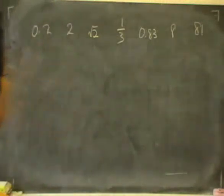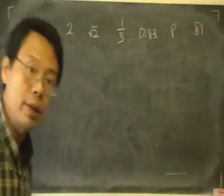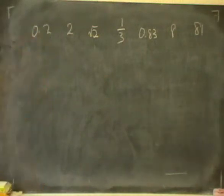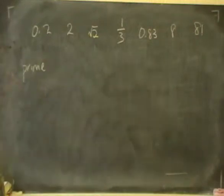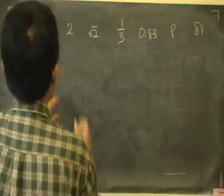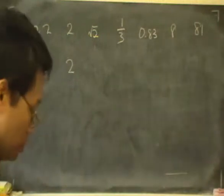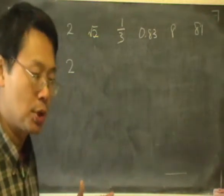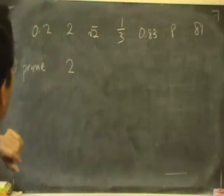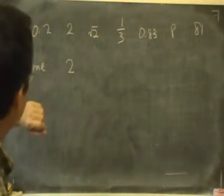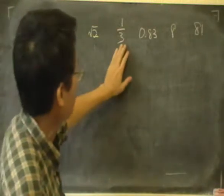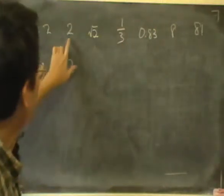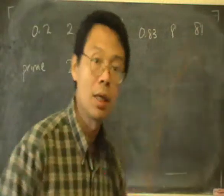We have some numbers here and the first question is to write down all the prime numbers. Prime numbers refers to just whole numbers so when we look at this we would immediately exclude decimals and fractions like that. I will just look at whole numbers 2, 8 and 81.